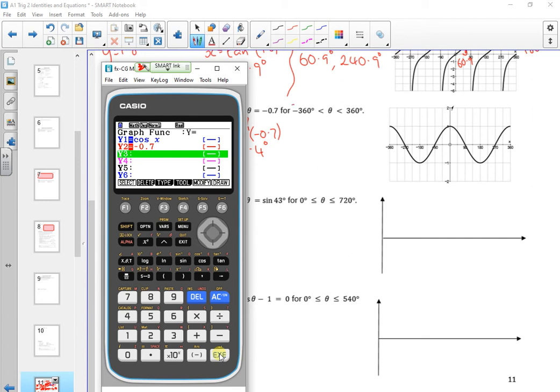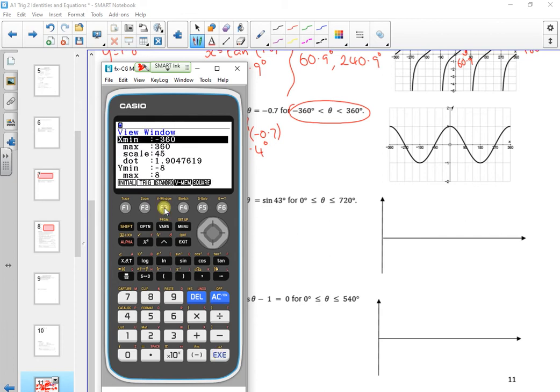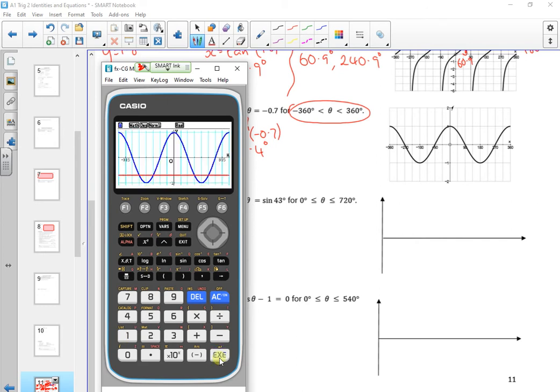Check our range, it's minus 360 to 360 still. If you look, we changed the y values to make it right, so sine and cos go between 1 and minus 1. So I'm going to do minus 1.1 through to 1.1.